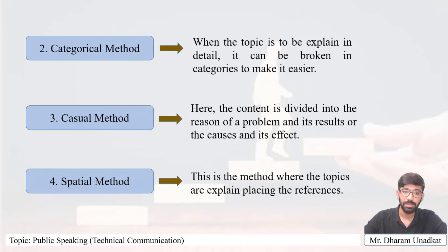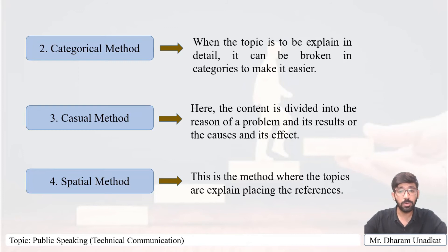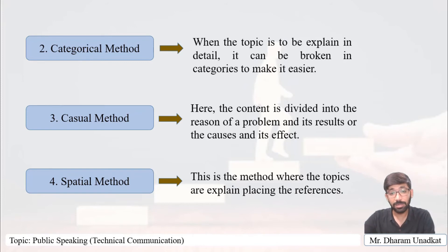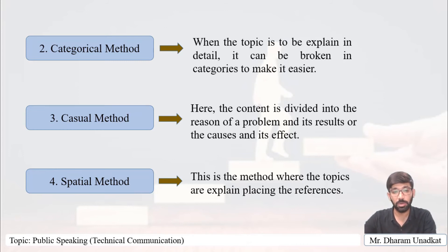The third arrangement is the casual method. In this method, the content is mainly divided into the reason of the problem and its result, or the causes and its effect. Here your script is divided into the problem and the result, or the causes and its effect. Sometimes it is also followed by the solution. Usually the reason comes first and then the result, but sometimes to engage the audience, they first give the result and then create a question or reason from it.